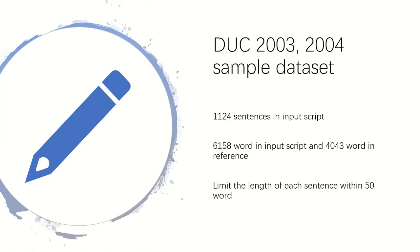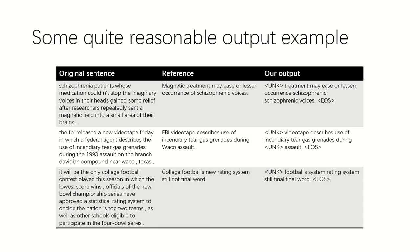Then we converted to DUC dataset. It only has 1,100 sentences in input script and around 6,000 words in script and 4,000 words in reference. We do the same processing to the original sentences. So this is some good examples for the model. But you can see there's some weird repetition problem. I'll talk about it later.